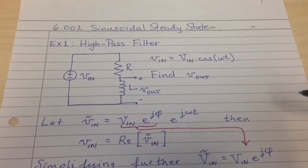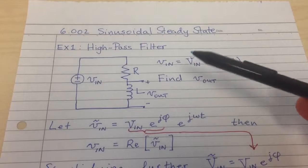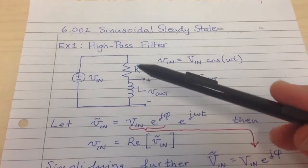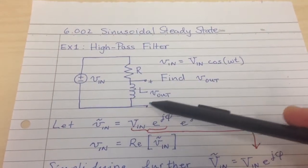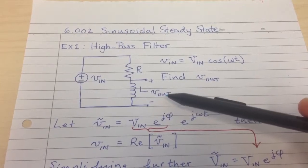So I'm going to work through a sinusoidal steady-state example of a high-pass filter. The basic example is a resistor and an inductor in series, and we take the output voltage across the inductor.